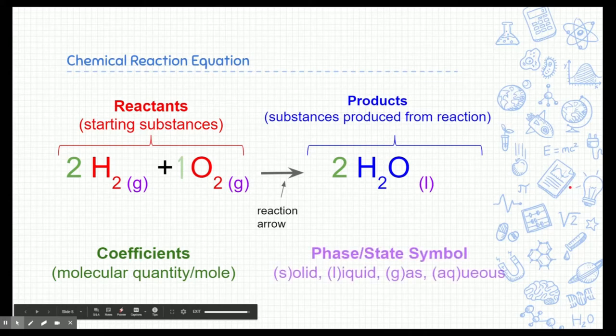The last thing are the little tiny phase or state symbols found on the bottom right-hand corner. The different phases or states these substances can be in are solid, liquid, gas, or aqueous. Aqueous is a special type of phase symbol we only use in chemical equations to represent that the substance was dissolved in water.